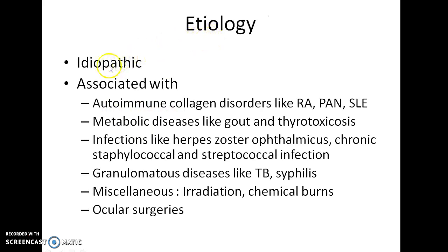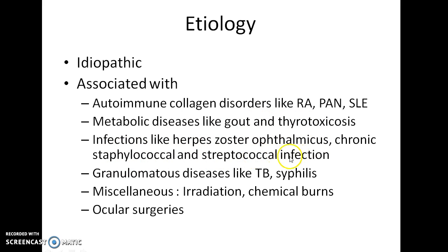Now coming to the etiology of scleritis. Many cases of scleritis are idiopathic in origin. Many cases are associated with autoimmune collagen disorders like rheumatoid arthritis, polyarthritis nodosa, and systemic lupus erythematosus. Some cases are also associated with metabolic diseases such as gout and thyrotoxicosis, infections like herpes zoster ophthalmicus, chronic staphylococcal and streptococcal infection, granulomatous diseases like tuberculosis and syphilis, and miscellaneous conditions like irradiation, chemical burns, and ocular surgeries.